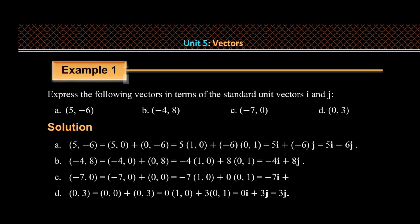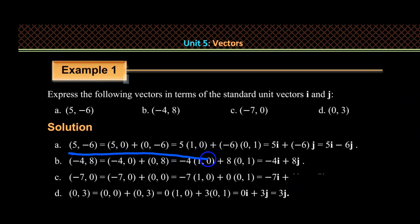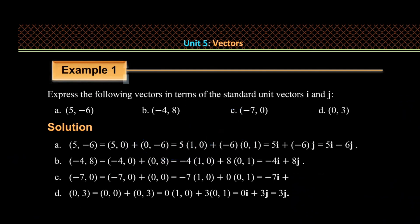By i and j, we use the standard unit vectors. For example: a vector with x-component 5 and y-component minus 6 can be written as 5i minus 6j. Another vector b is written using minus 4i for the x value.